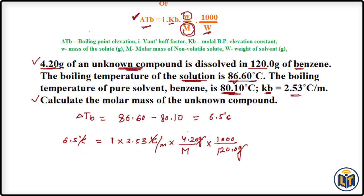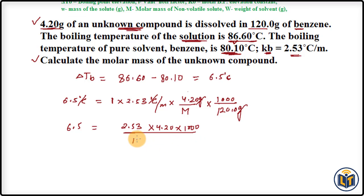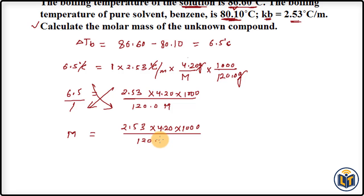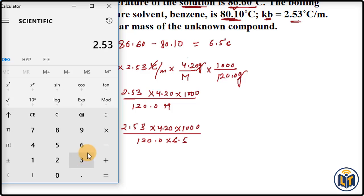The gram units cancel and degree Celsius cancels out. We rearrange to solve for M (molar mass) by cross-multiplication, transferring M to the left side and the Delta TB value to the right. The setup becomes: M = (2.53 × 4.20 × 1000) / (120.0 × 6.5).